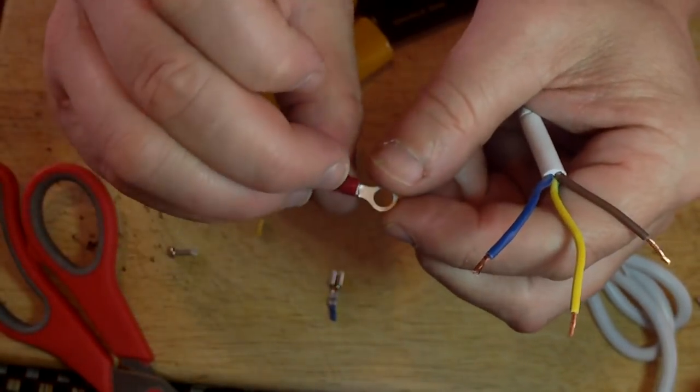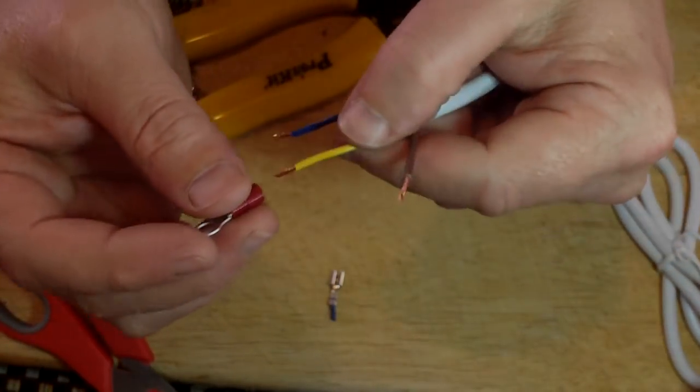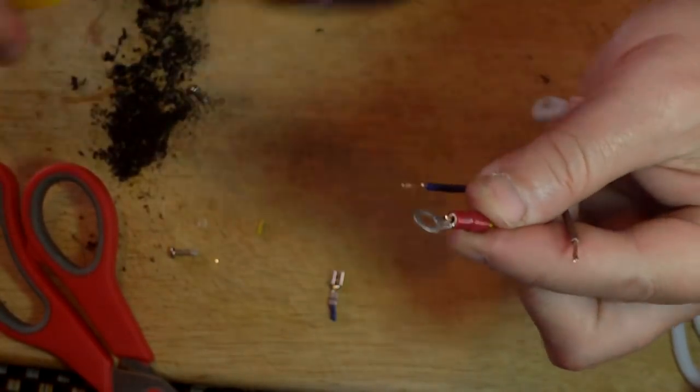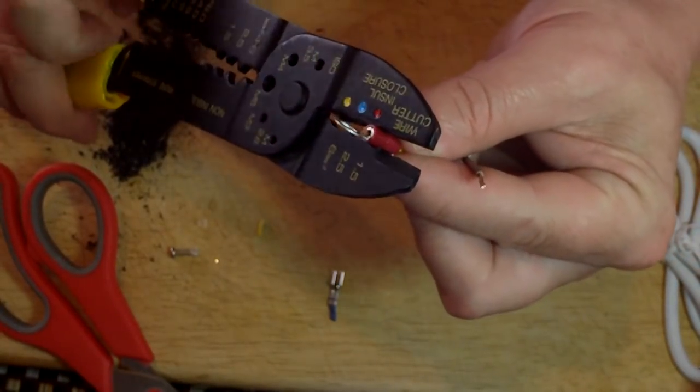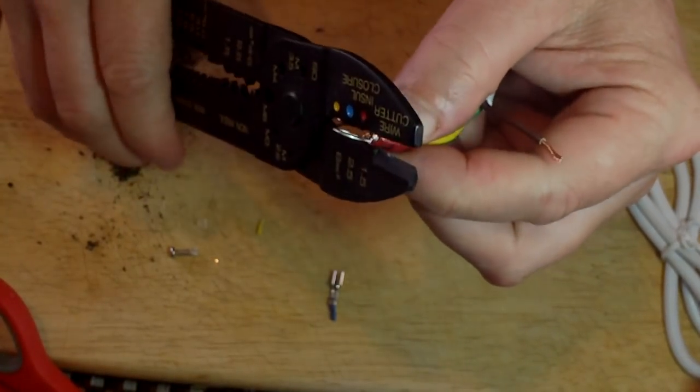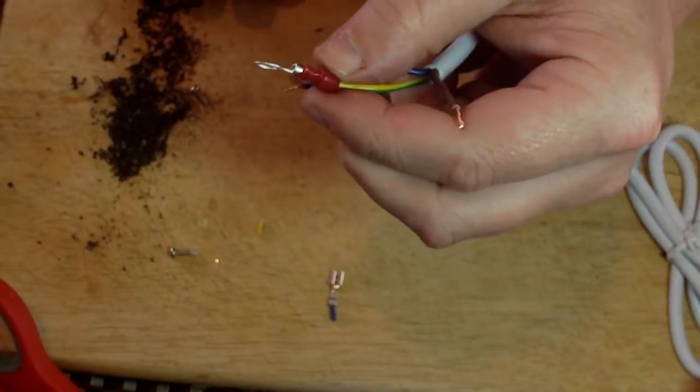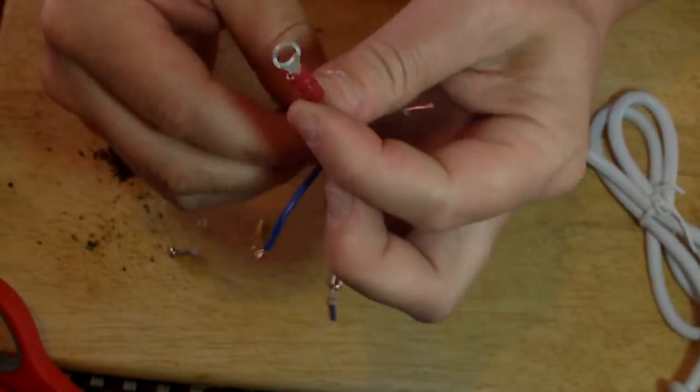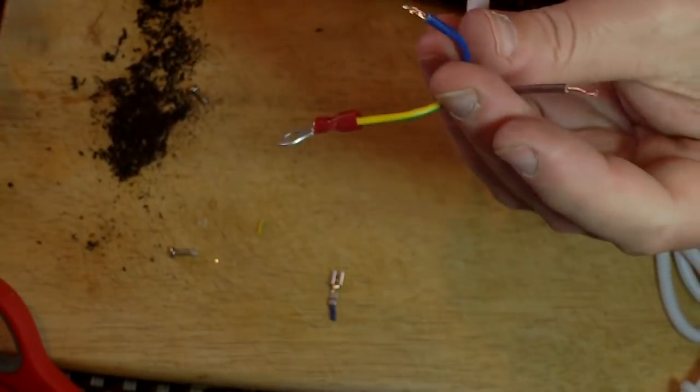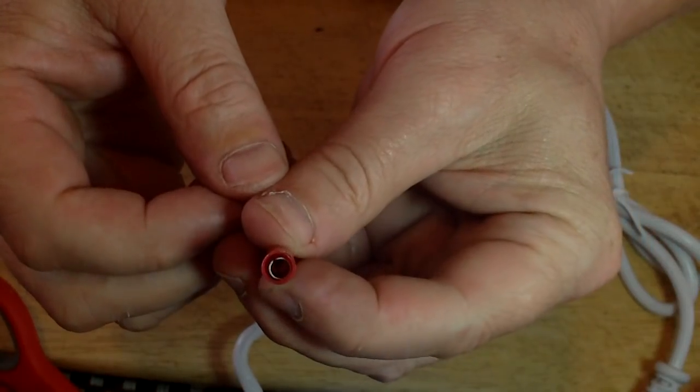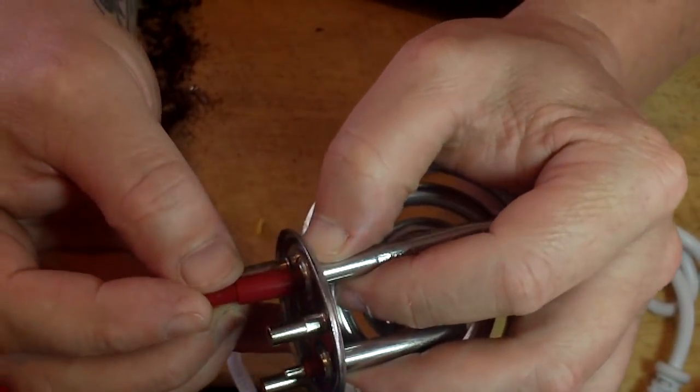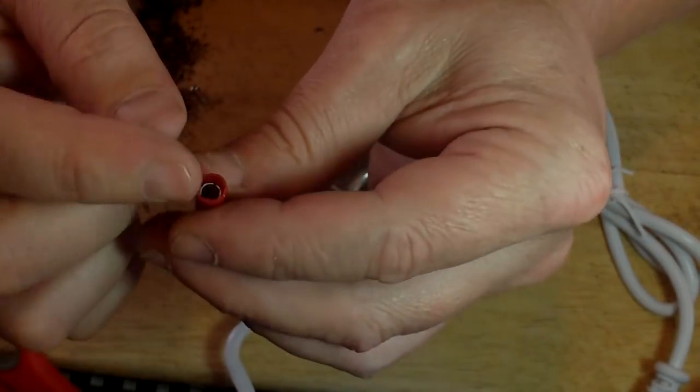So you just want to strip probably a quarter of an inch off the end of the wires. You can use a knife if you have to. Now in Australia earth is green. On the earth I'll put a loop like that. You could just make a loop in the wire. And crimp it shut. That was probably too much, a bit heavy handed. There we go that's the earth wire.